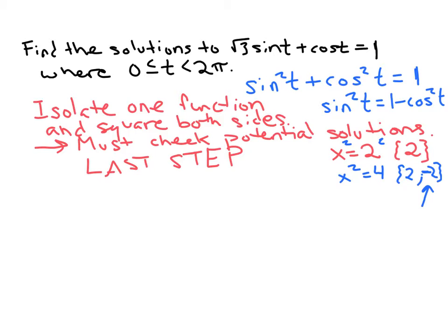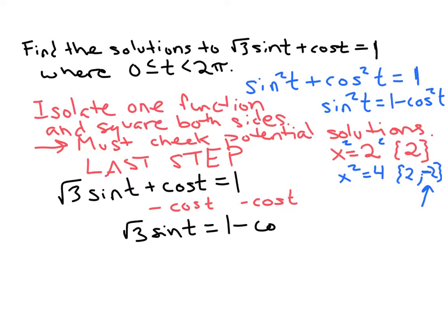But what we need to do right now is the squaring of both sides. So let me rewrite the original equation here. If I'm looking at this equation, I don't really care for that √3 either. So I'm going to move the cosine over. And again, it doesn't matter which function. So I'm going to isolate √3 sin(t) so that now I can square both sides.